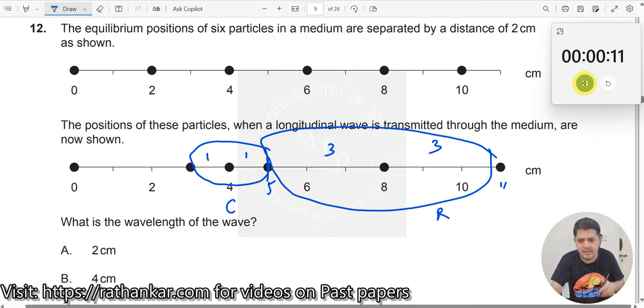The distance between one compression. Now, what is the wavelength of the wave? This is between one compression and the next compression in a longitudinal wave, between any two C's. This will be called as one wavelength. Or between any two R's, between any two rarefactions also, it is called as a wavelength.